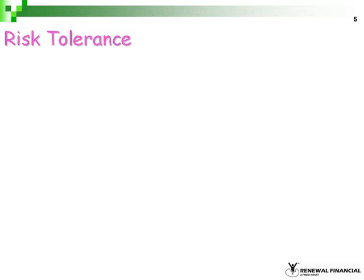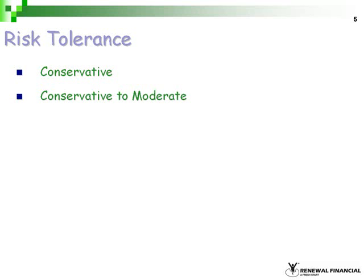Risk is generally categorized into five zones. First, conservative — safety of principle is the dominant concern, and investors seek to keep risk to a minimum. In the conservative to moderate zone, safety of principle and income are the primary concerns, but a secondary goal is growth of capital. Investors are willing to accept some risk in seeking to enhance returns.